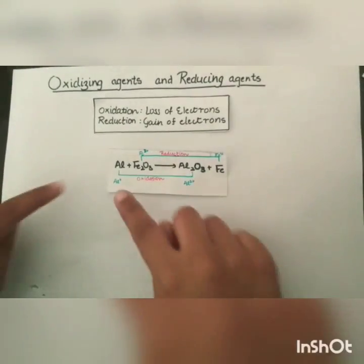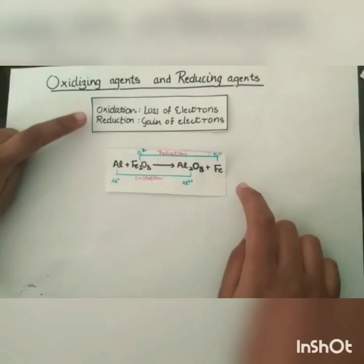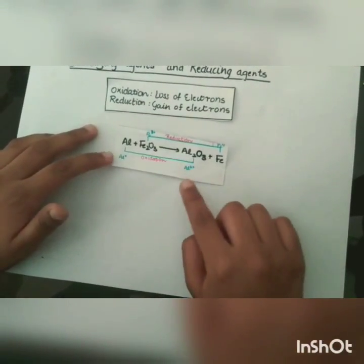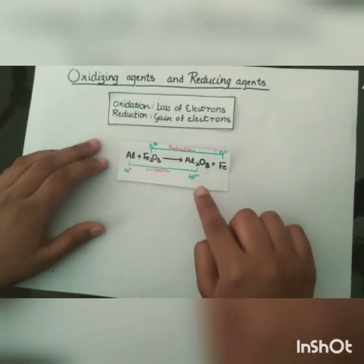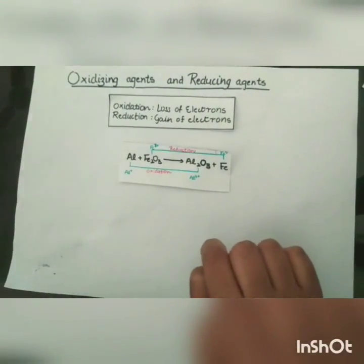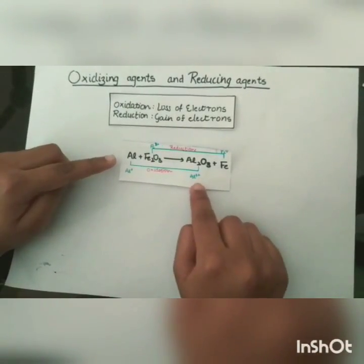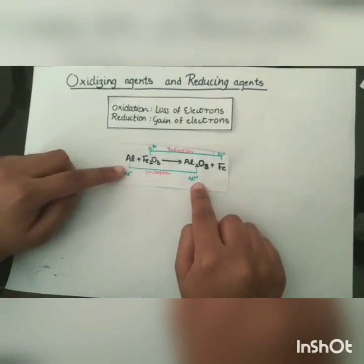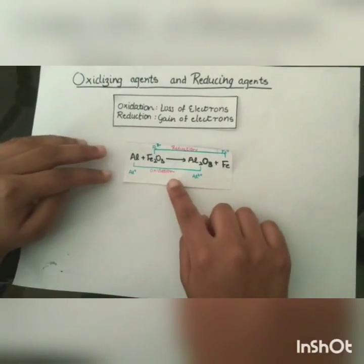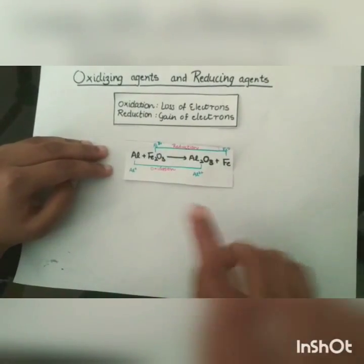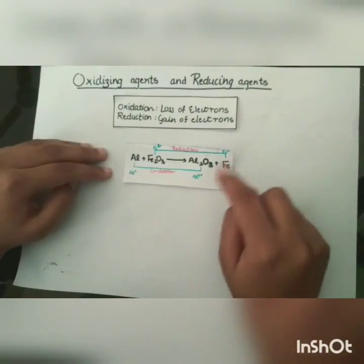Let's understand these concepts through an example: aluminum plus ferric oxide forms aluminum oxide and iron. First, aluminum had zero valency, but after the reaction it had three valency, therefore it lost three electrons — it is oxidized. Ferric oxide had three valency initially, but after the reaction iron had zero valency.